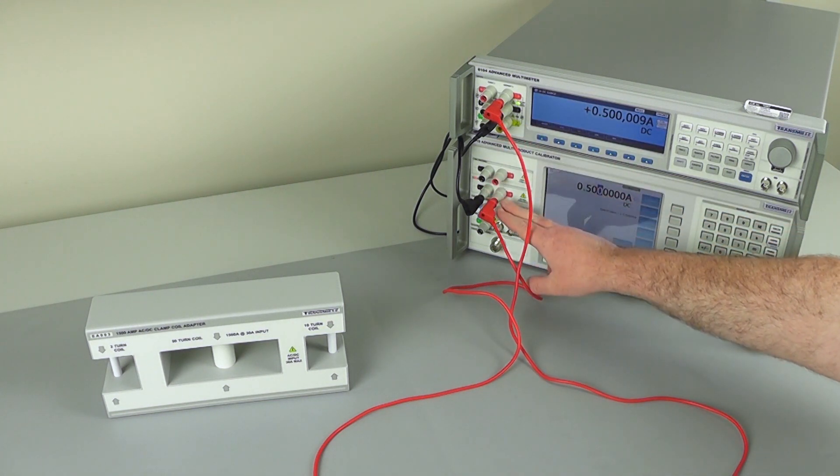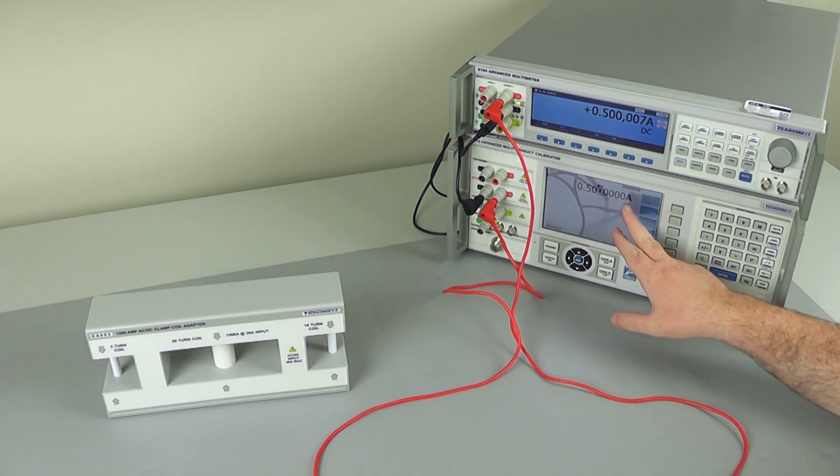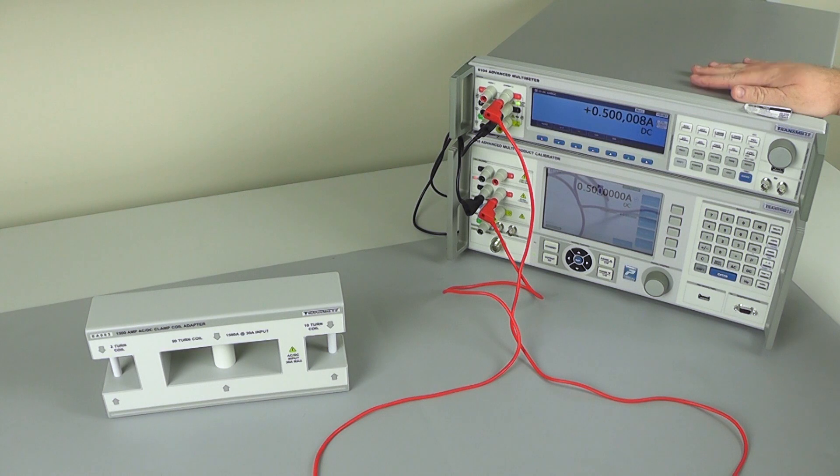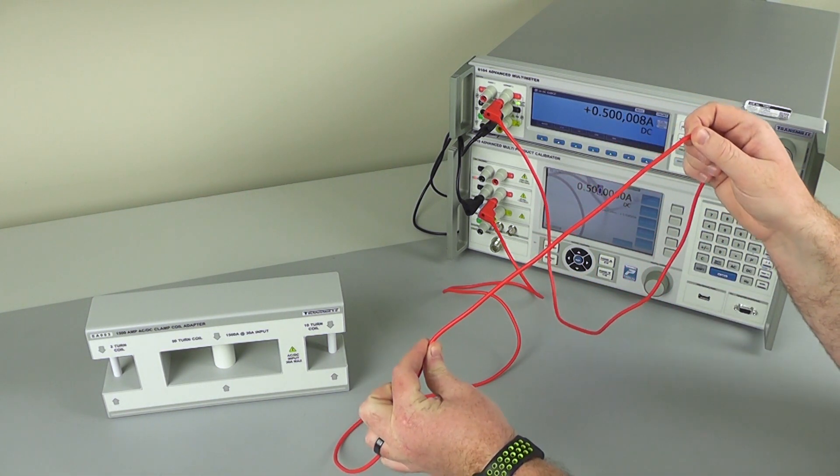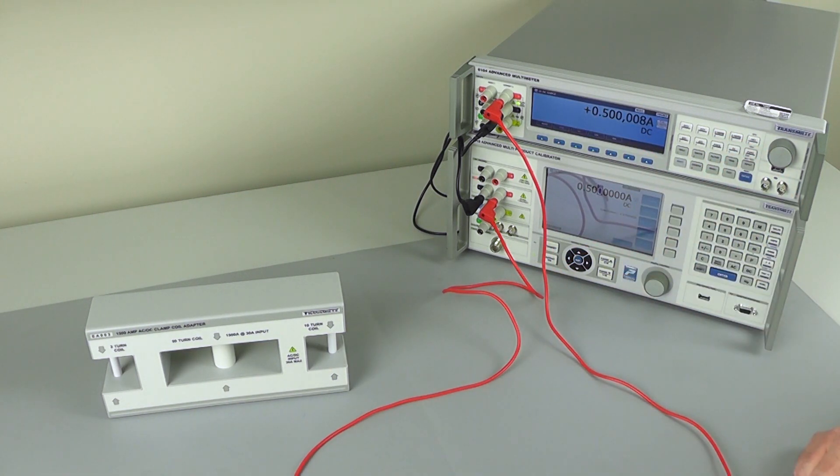We are passing our current from our calibrator straight into our multimeter with a setting of 0.5 amps. We have a reading here of 0.5 amps. So showing that in this wire, which we will now call our single conductor, we have half an amp flowing.